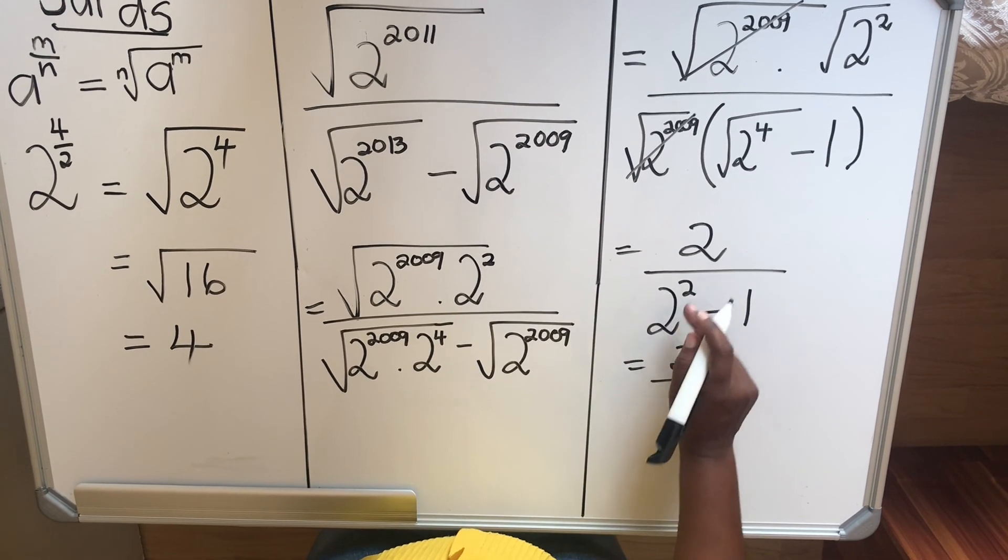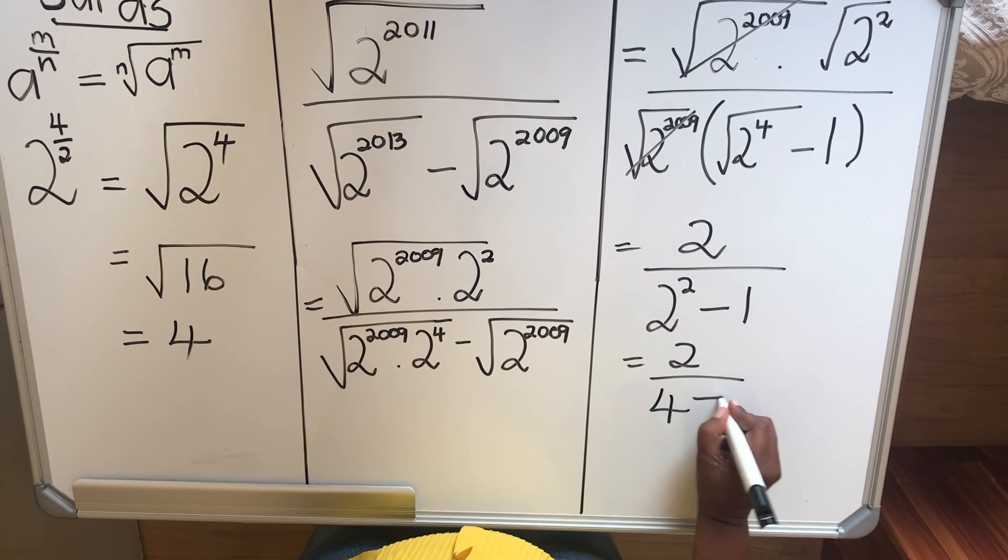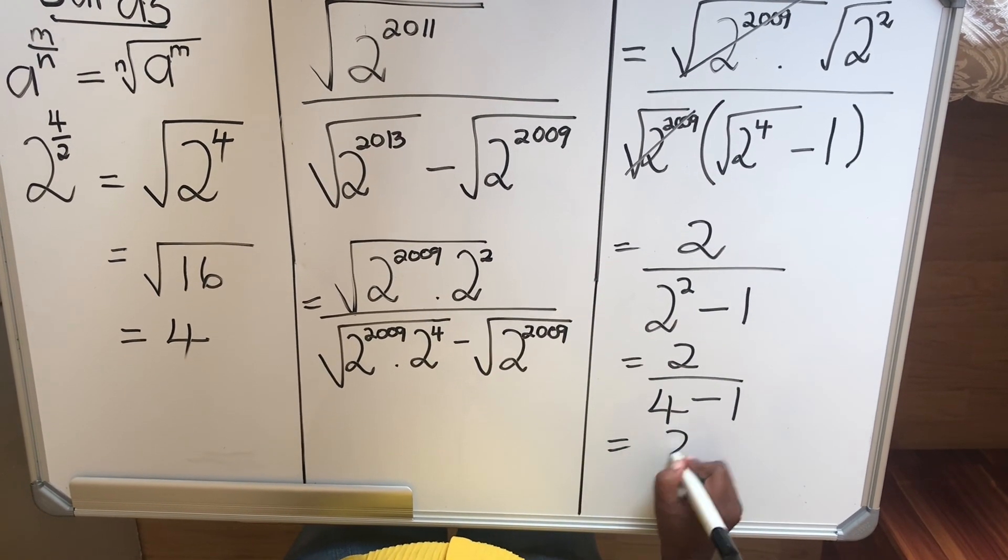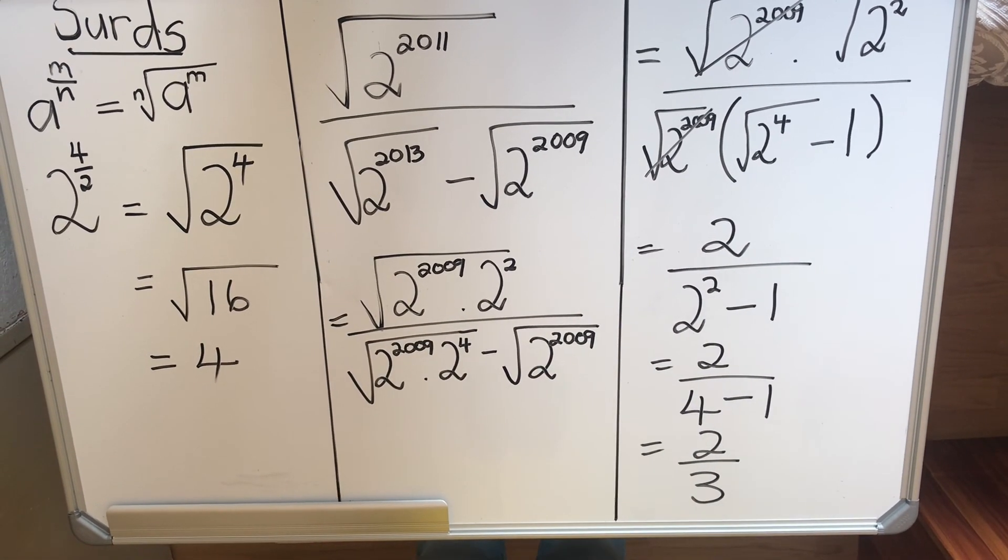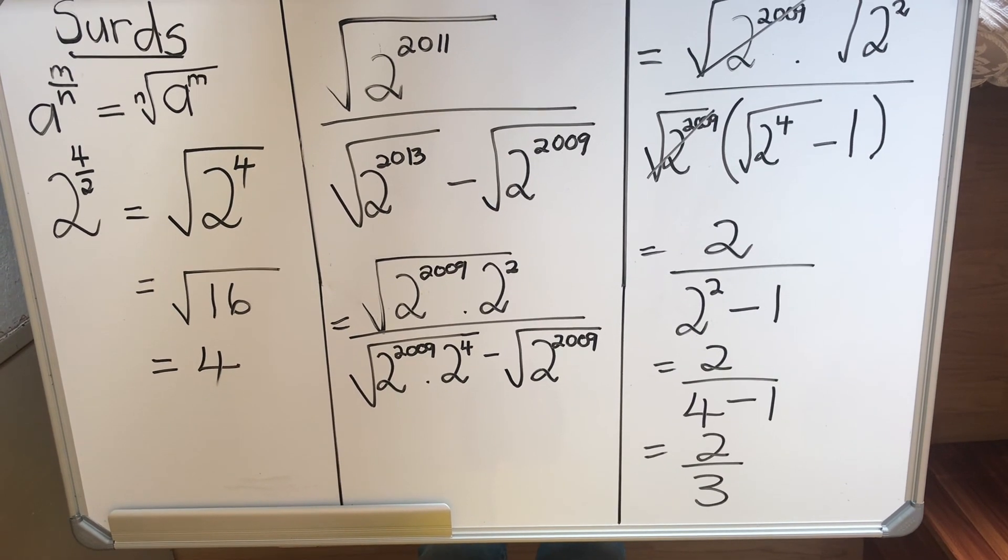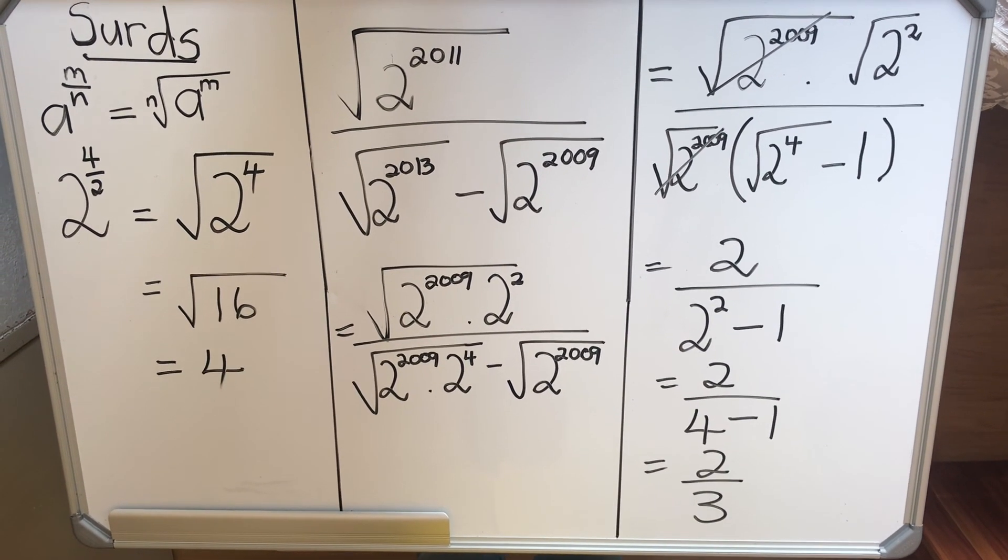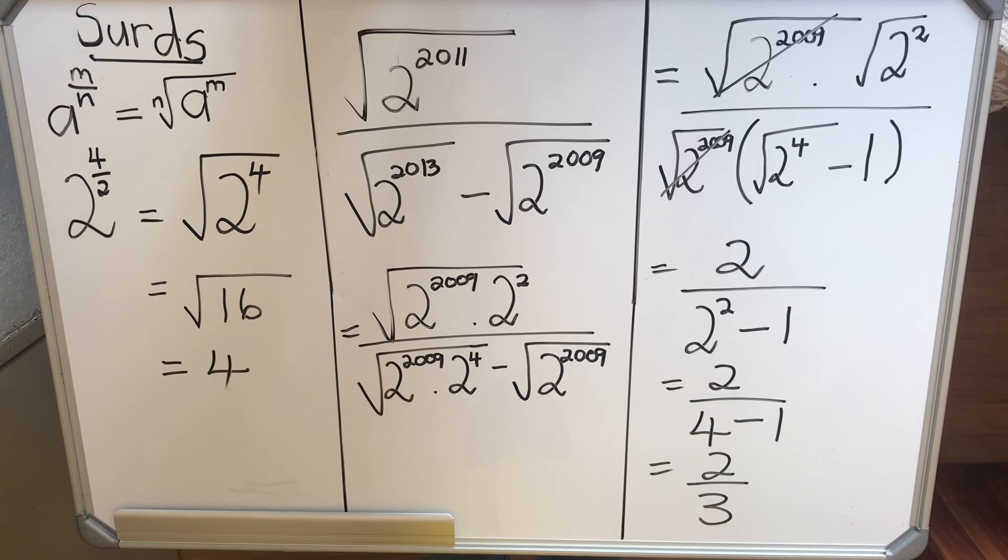2 to the power 2 is 4 minus 1, so I get 2 divided by 3. So this is normally three or four marks in an exam and it's not that difficult. If you practice, practice, practice, you get it right. This is the end of our lesson, thank you for watching.